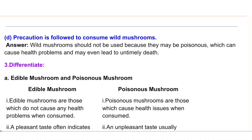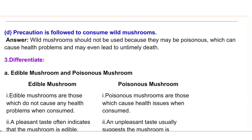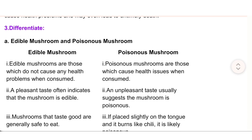3. Differentiate. (a) Edible mushroom and poisonous mushroom. Edible mushrooms are those which do not cause any health problems when consumed; a pleasant taste often indicates that the mushroom is edible; mushrooms that taste good are generally safe to eat. Poisonous mushrooms are those which cause health issues when consumed; an unpleasant taste usually suggests the mushroom is poisonous; if placed slightly on the tongue and it burns like chili, it is likely poisonous.